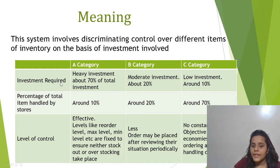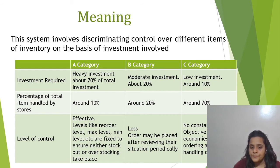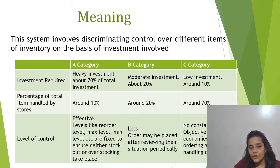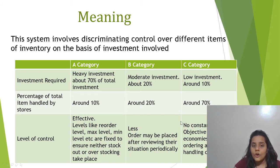Next, we have the B category. In this, around 20% of the total investment will be invested and it also constitutes around 20% of the total items handled by the store. Since a moderately less amount is invested in this category of stock, the level of control is also less. Normally, periodic review of the level of inventory takes place and orders are placed based on this periodic review.